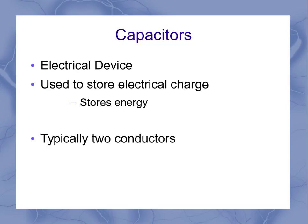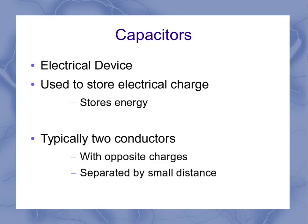Typically, a capacitor is going to have two different conductors with opposite charges stored on each one. And those two conductors are going to be separated by a small distance. This is a typical setup, not always the case.